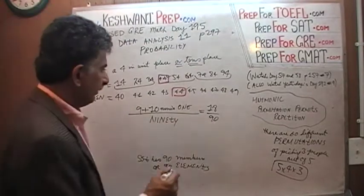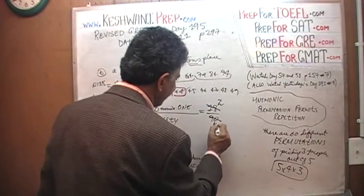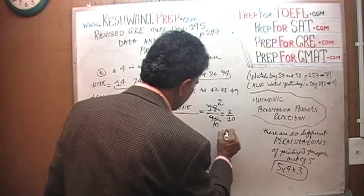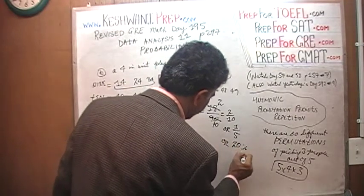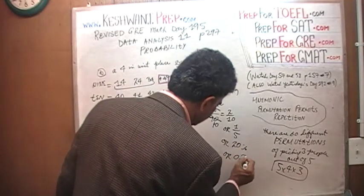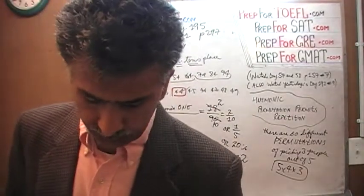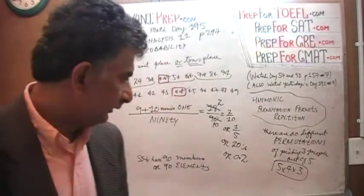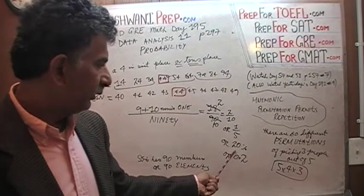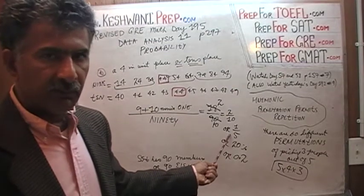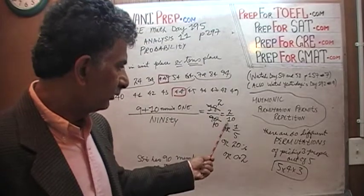Eighteen over ninety. Divide the top and bottom by nine — you get two and ten — so it's two over ten, or one-fifth, or twenty percent, or 0.2. However, the answer format depends on the multiple choice options: if it's in decimal, pick 0.2; if percentages, twenty percent; if listed as a fraction, you need to reduce two-tenths to one-fifth.